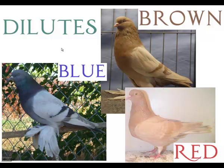Dilutes are a faded-out version of the three basic colors. This is silver, which is dilute blue. This is yellow, which is dilute red, and dilute brown is khaki.